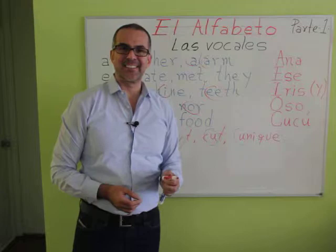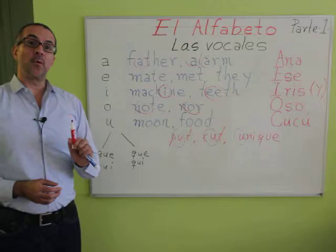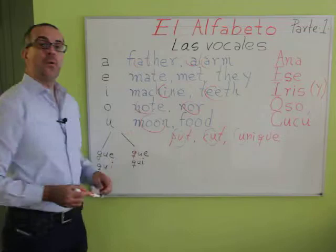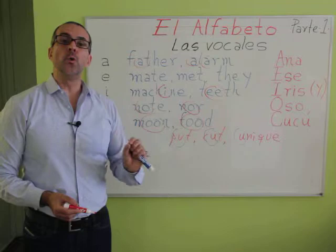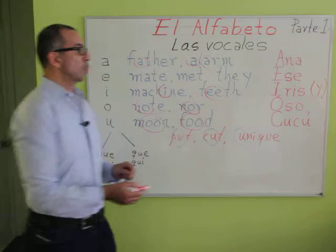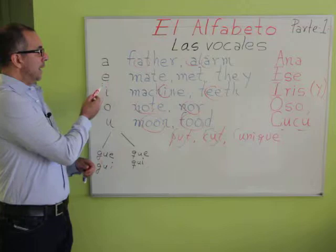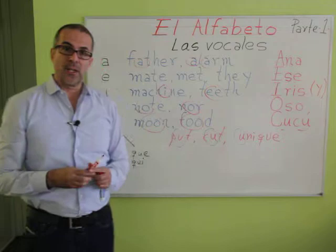U. In Spanish, think of the sound of the double O in 'moon' or the double O in 'food.' Moon. Food. That's the sound of the vowel U in Spanish — cuco.